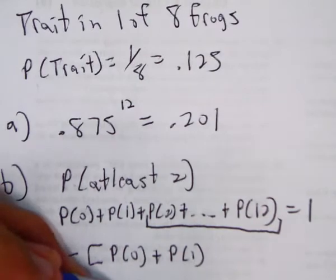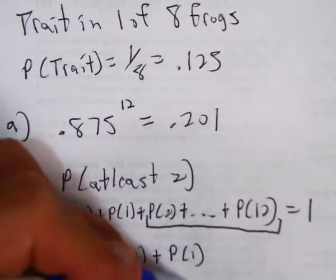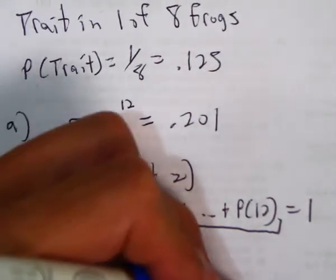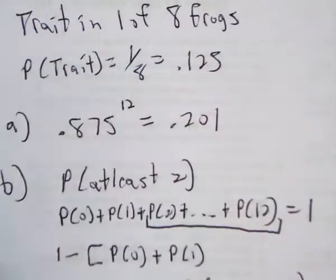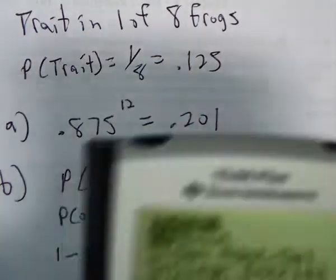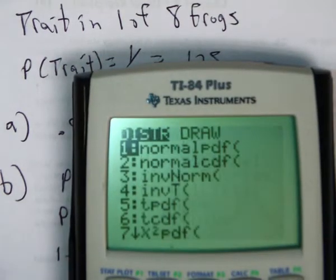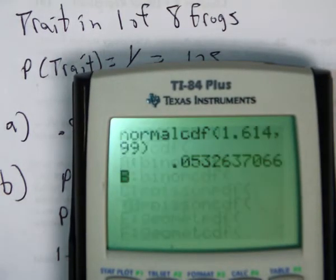Well, that's one minus binomCDF, twelve frogs, 0.125 is the probability to have the trait, and up to one. So let's see what that looks like. Hold on.